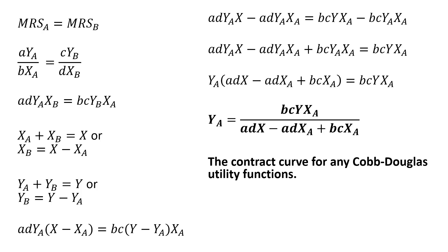The contract curve for any two-person Cobb-Douglas utility function economy will be defined by this general formula. Now let's do some examples.